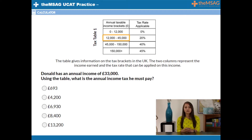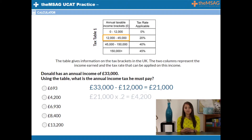So how far into the bracket is he? To calculate this, subtract £12,000 from £33,000, which gives us £21,000. So £21,000 of his income is in this 20% tax bracket. To find 20% of £21,000, multiply by 0.2, which gives us £4,200. So the answer is B. He pays £4,200 in tax on that £21,000.